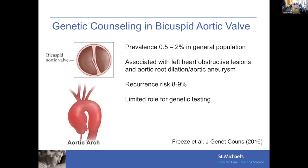Bicuspid aortic valve is very common — 0.5 to 2 percent in the general population — with the vast majority of adults probably unaware they have one. It's associated with left heart obstructive lesions including coarctation of the aorta, hypoplastic left heart syndrome, and Shone's complex, as well as aortic root dilation and aortic aneurysm, making it part of an aortopathy or left ventricular outflow tract spectrum. Recurrence risk is 8 to 9 percent — so if one parent has a bicuspid aortic valve, the child has about a 5 to 10 percent chance — higher than the general population but not 50 percent.